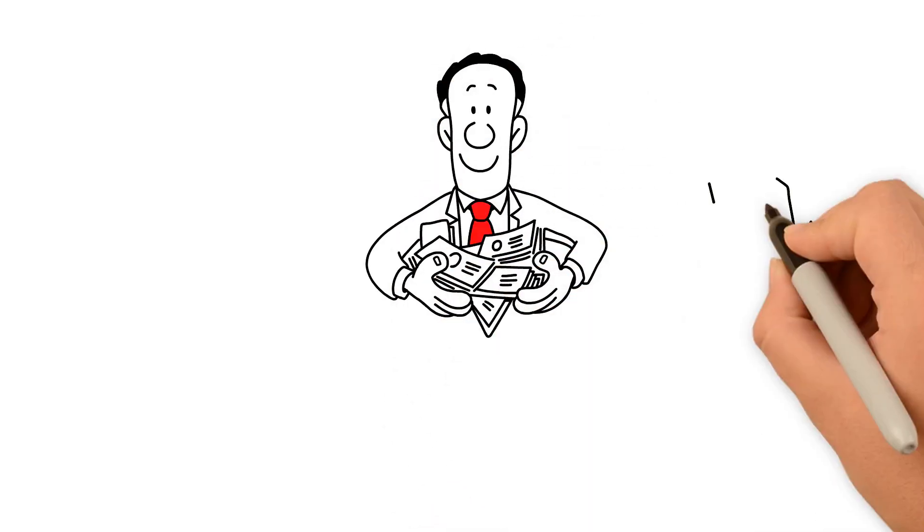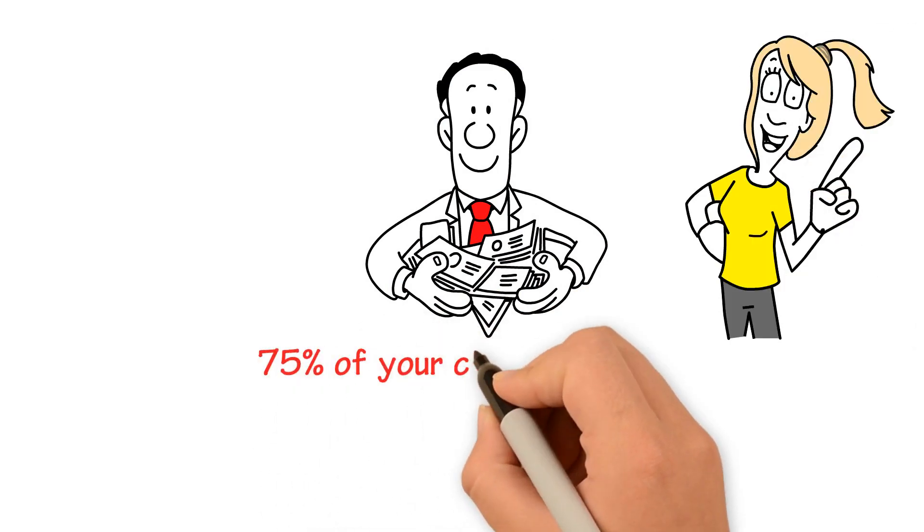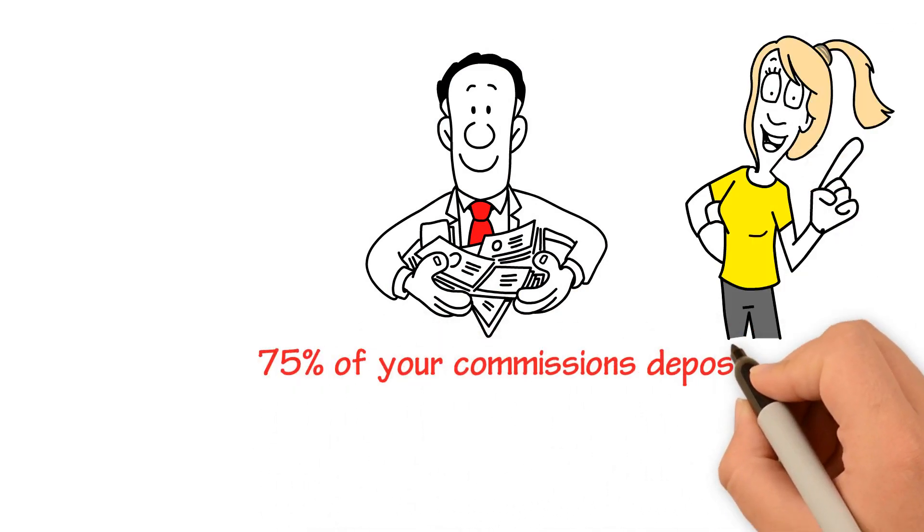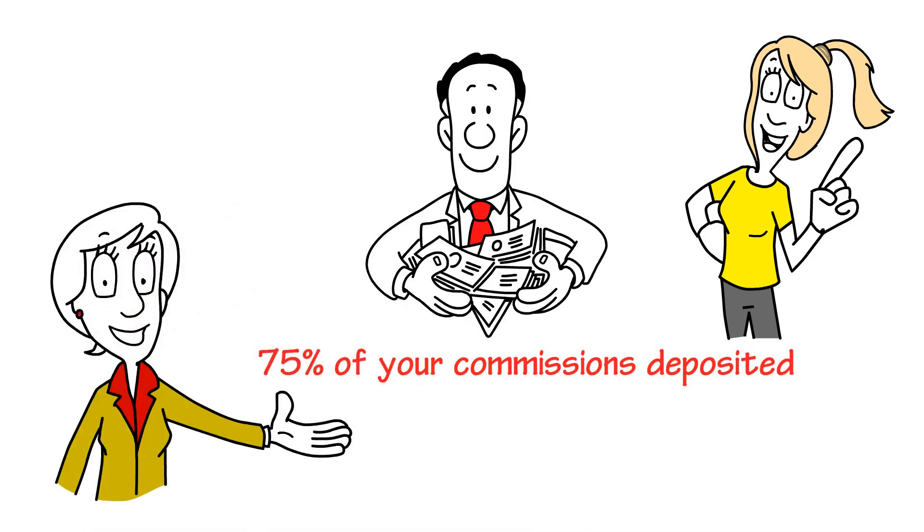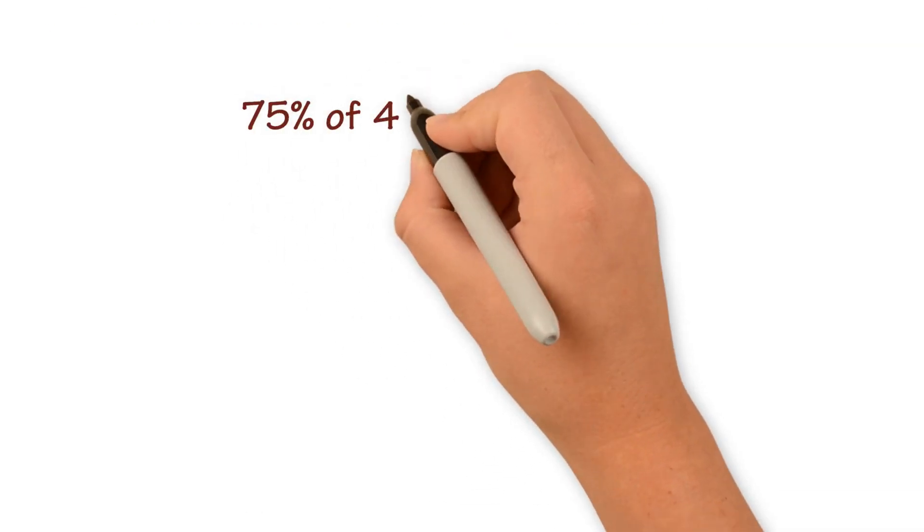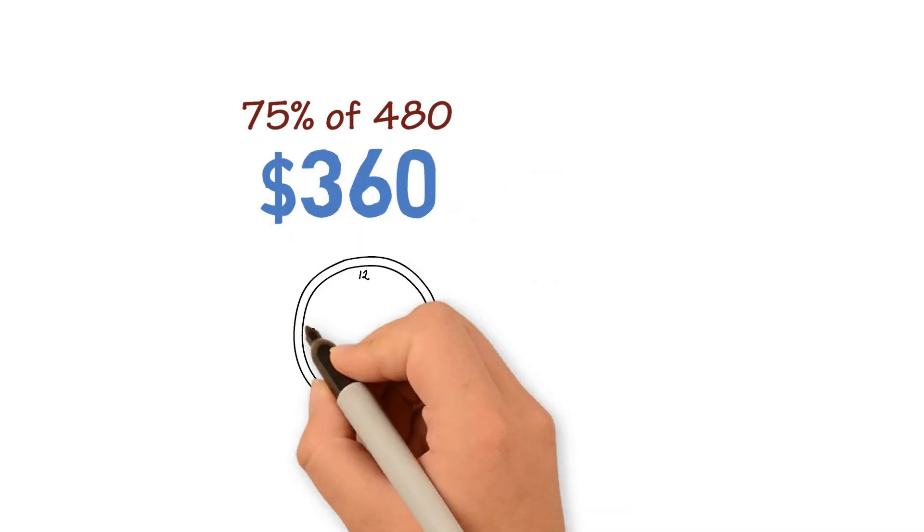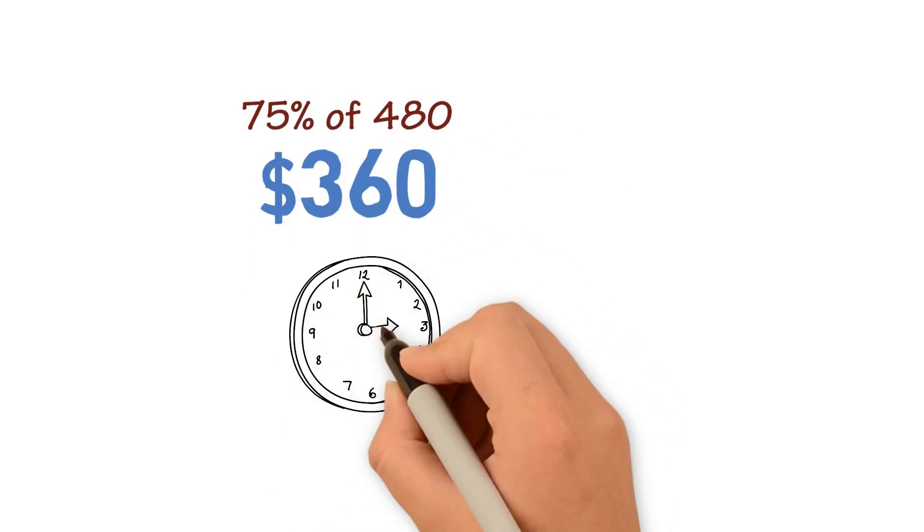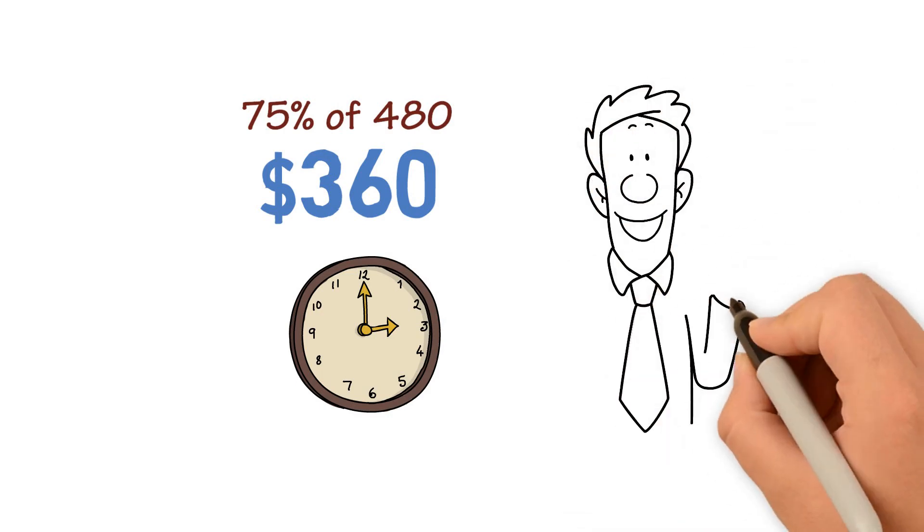Now, here is where your 9-month advance kicks in. You're going to get 75% of your commissions deposited right into your account the next day. 75% advance is the same thing as a 9-month advance. They could be used interchangeably. Now, 75% of $480 is $360. You made that much money in an hour of your time. That's $360 for you up front. Pretty awesome, huh?